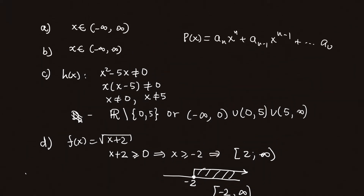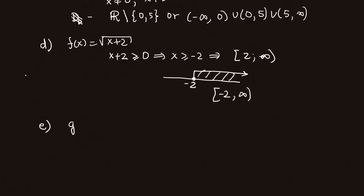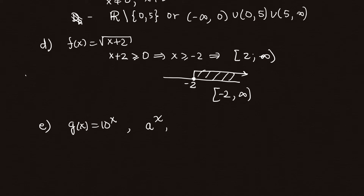Part E: we have an exponential function g(x) = 10^x. An exponential function of the form a^x is continuous on the domain of the function in the exponent. The linear function x is continuous on any real number, so g(x) will also be continuous on all real numbers.